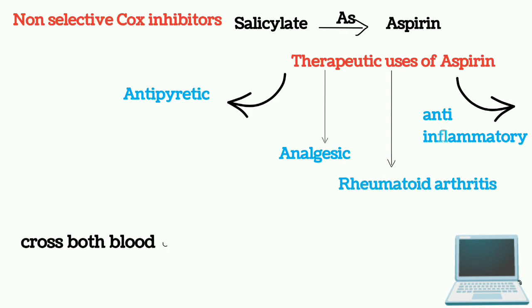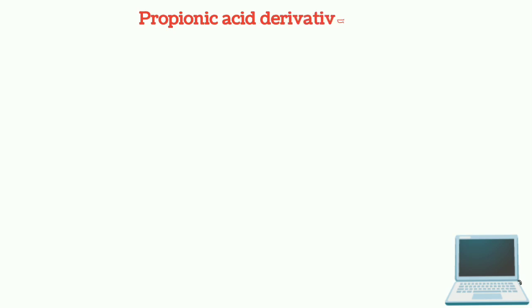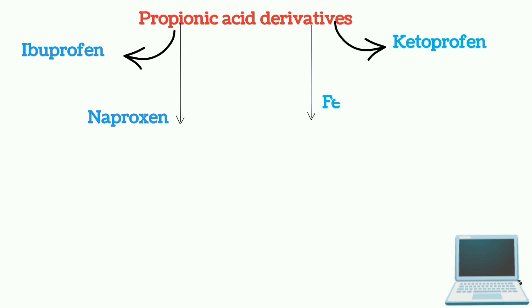These drugs can cross both the blood-brain barrier and the placenta. Propionic acid derivatives include ibuprofen, ketoprofen, naproxen, fenoprofen, and flurbiprofen.